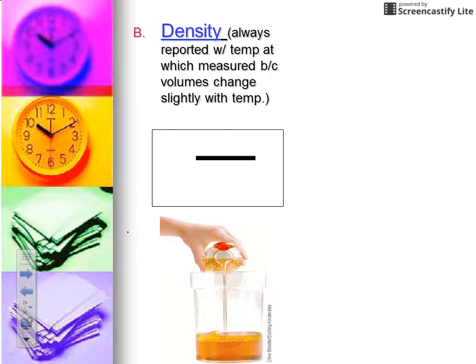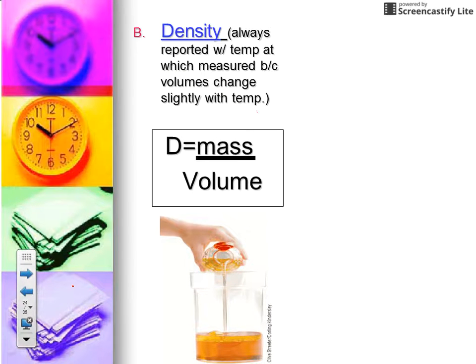Let's move on to our second and final unit that's derived: density. Now density is always reported with temperatures at which they were measured, and the reason is because your volume can change slightly with temperature. Remember we talked about matter typically expands when it's heated and it contracts when it's cooled. So that means its volume is changing, so your density is going to always be reported with the temperatures they were measured. The standard formula for calculating density is the object's mass divided by its volume.